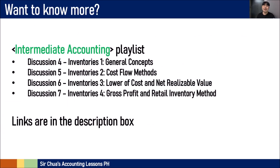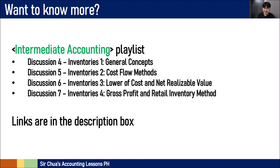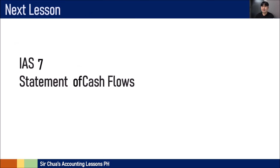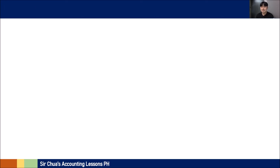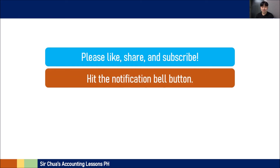This was a primer on inventories. The totality of the discussion on inventories is in intermediate accounting — all calculations, how to properly compute for the cost of inventory, how to apply the specific identification method, first-in first-out method, weighted average method, how to properly compute the lower of cost and NRV, and the gross profit and retail inventory method. For those who want to advance, go to the intermediate accounting playlist for discussion numbers 4, 5, 6, and 7, which cover inventories parts 1 to 4. Links are provided in the description box. Our next lesson is IAS-7 Statement of Cash Flows. Please like, share, and subscribe to Sir Chua's Accounting Lessons PH and hit the notification bell. Comment your questions, suggestions, and reactions. This has been Sir Chua's Accounting Lessons PH. To God be all the glory, honor, and praise. Thank you and have a great day.